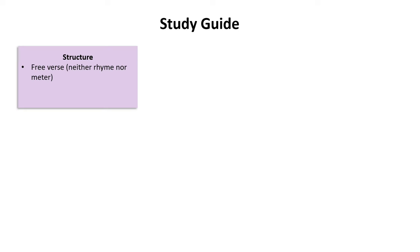Now let's create a study guide for Those Winter Sundays. In terms of structure, this poem is an example of free verse, since it has neither rhyme nor meter. The poem consists of full sentences, which makes it sound as though the narrator is reciting a monologue. We have three stanzas — a quintain, a quatrain, and another quintain — meaning the poem has five lines, four lines, and five lines again.